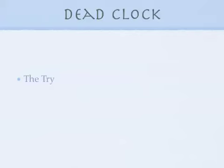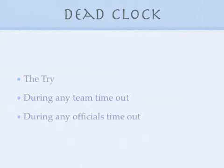The clock is always dead for the try; by rule, this is an untimed down. We also have a dead clock for any team timeout. Following a team timeout, the clock will not start until the ball is legally snapped. The clock is also dead during any official's timeout. The status of the clock is determined by the previous play, and the referee will indicate by either winding the game clock or blowing a simple ready for play the appropriate status of the clock.